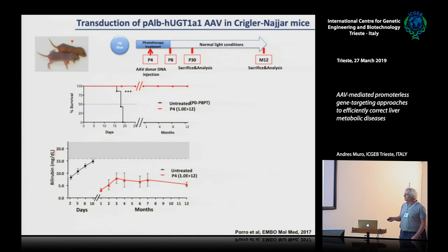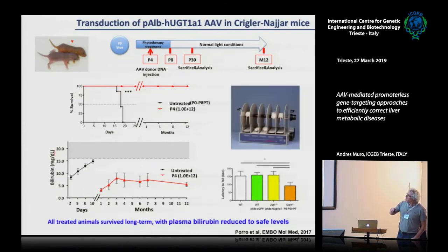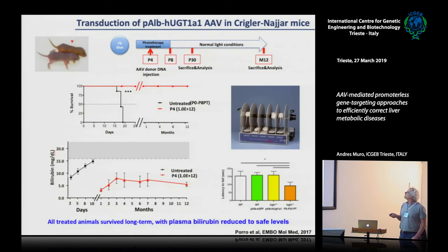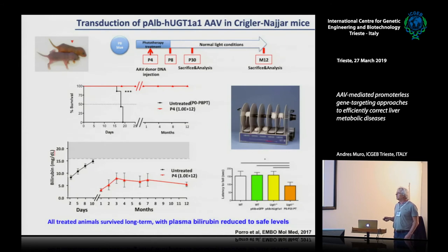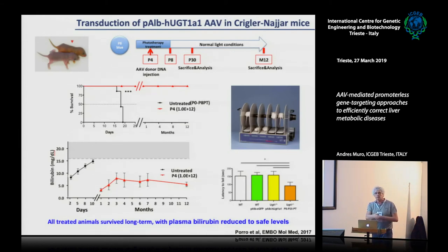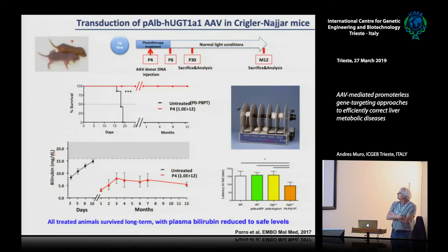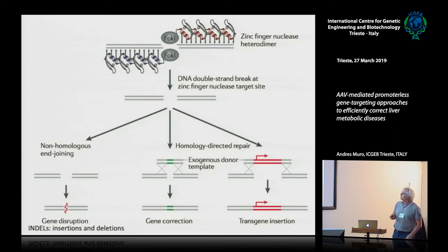Bilirubin levels in treated animals remained in the safe range but were still different from the wild-type levels of 0.5 to 1. Animals showed normal behavior in behavioral tests. However, the levels were not high enough to consider this for therapeutic application. We tried different compounds to increase homologous recombination but were not successful. So we moved to a strategy using a nuclease to create a double-strand break and introduce the transgene into the albumin gene.